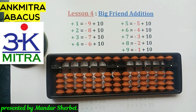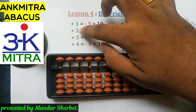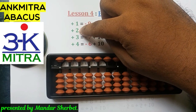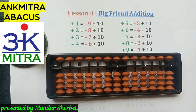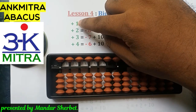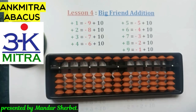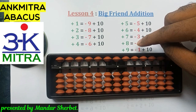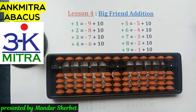When do we use big friend addition? I'll write down these numbers: one to four separately, and five through nine in a different section. Whenever we are adding any of these four numbers — one, two, three, and four — they have got small friends. So whenever we are adding one, two, three, or four, we first check whether we can do it with small friend or not. For five through nine, there are no small friends, so whenever we fall short of beads while adding those numbers, we directly use their respective big friends.